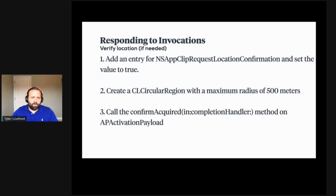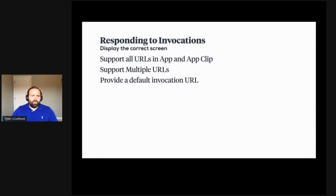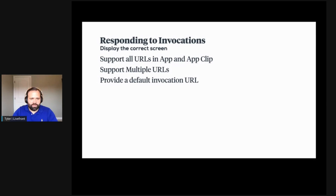Finally, you call the confirmAcquired method on an APActivationPayload, which is obtained from the user activity's App Clip activation payload. You need to display the correct screen. It's important to note that if the user has the full app installed, when the invocation URL is triggered, the full app launches rather than the App Clip. You can support multiple URLs — for example, the coffee shop in downtown San Francisco and additional locations in San Jose or Minneapolis.